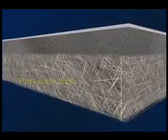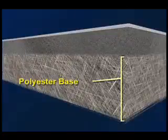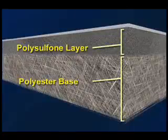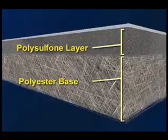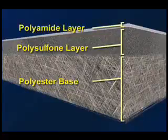We begin the process with a fabric support base and then coat it with a microporous polysulfone layer. This provides additional support for the top 0.2 micron thick membrane barrier layer.